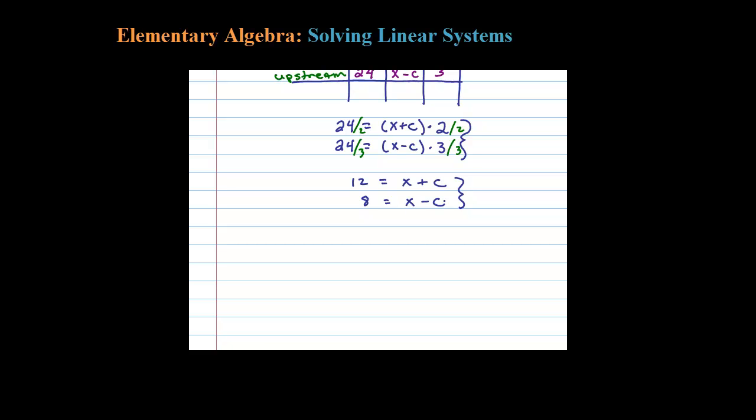Just by dividing like that, my C's are lined up to eliminate. Let's add these two equations together: 12 plus 8 is 20, the C's eliminate, leaving 2X on the right side. Dividing by 2, X equals 10.